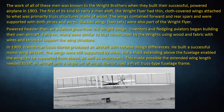The work of all of these men was known to the Wright brothers when they built their successful powered airplane in 1903. The first of its kind to carry a man aloft, the Wright Flyer had thin cloth-covered wings attached to what was primarily truss structures made of wood. The wings contained forward and rear spars and were supported with both struts and wires. Stacked wings — two sets — were also part of the Wright Flyer. Powered heavier-than-air aviation grew from the Wright design, and inventors and fledgling aviators began building their own aircraft, many using wood and fabric with wires and struts to support the wing structure.